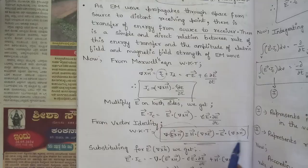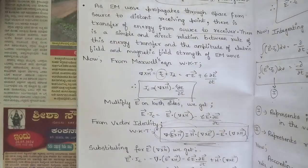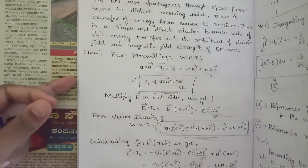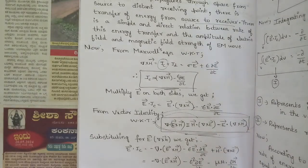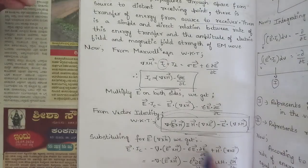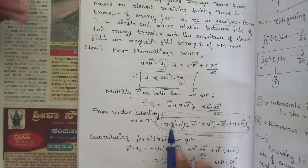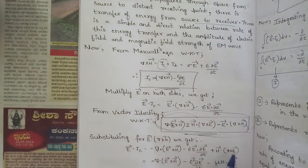This is a vector identity from vector algebra — those who studied the relationship between curl, divergence, dot product, and cross product will recognize it. Using this identity, substituting E·(∇ × H), we get: E·Jc = −∇·(E × H) − ε·E·(∂E/∂t) + H·(∇ × E).